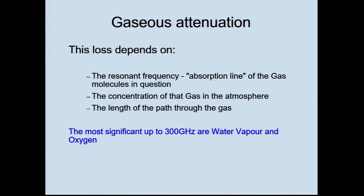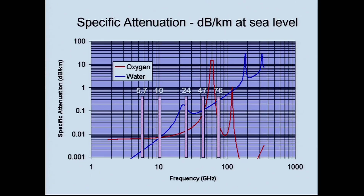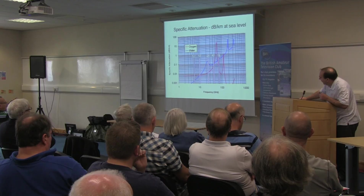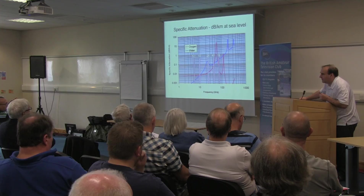So the loss you get depends very much on the frequency and the absorption line of the molecule. It also depends on how much of that gas is there and how far you're actually travelling through it. The most significant frequencies from our point of view as radio amateurs — from 300 MHz up to about 300 gigahertz — involve water vapour and oxygen resonances. This slide gives what we call specific attenuation: how many decibels you lose per kilometre. At the lower microwave bands, for example at 5.7 GHz, looking at the loss of water and oxygen combined, it's around 0.001 dB per kilometre — pretty low, so you have to go a very long way before you get any significant loss.